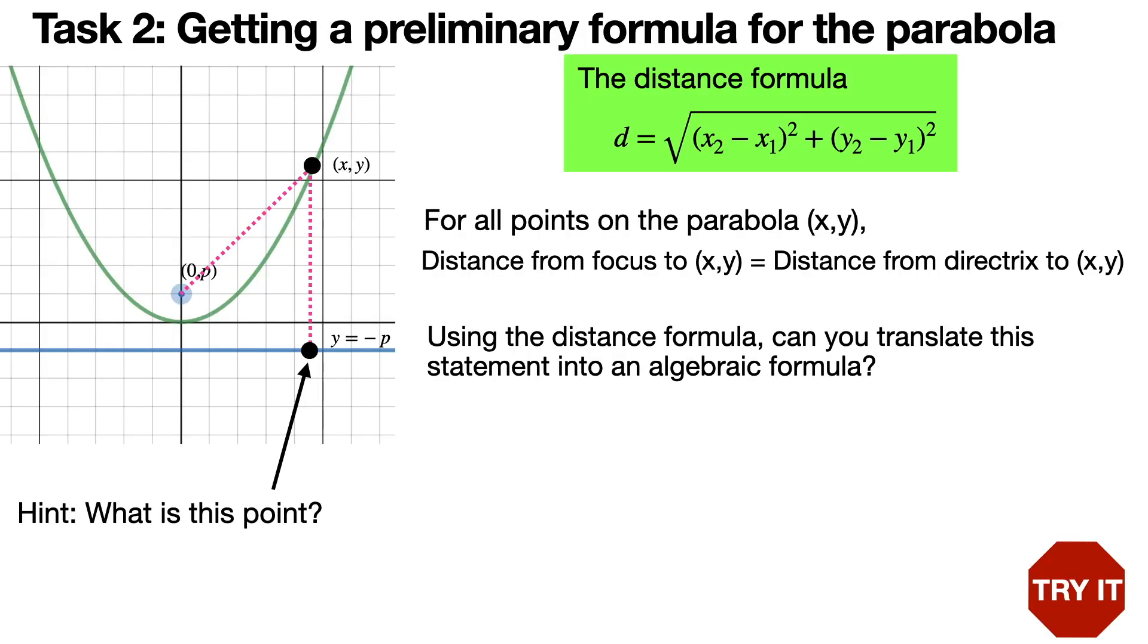The second thing we're going to do is get a preliminary formula for the parabola that has that focus and directrix. We're going to use the definition of a parabola: all the points such that the distance from the focus to the point equals the distance from the directrix to the point. Using the distance formula, can you translate this statement into an algebraic formula? If you don't remember how the distance formula works, check out one of the appendices at the end.